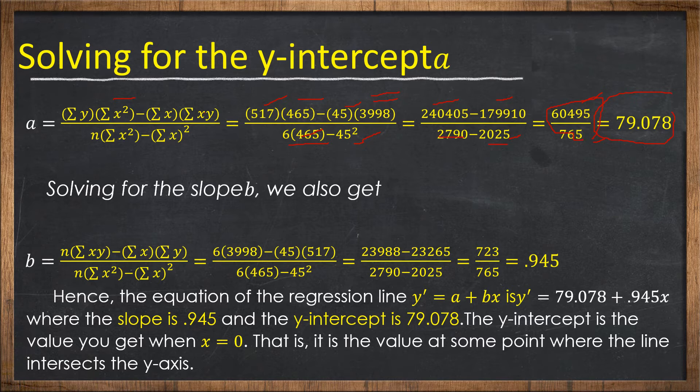That is for a, the y-intercept. For b, the slope, using direct substitution, we multiply, subtract, then divide, and we get b equals 0.945. Hence, the equation of the regression line y = a + bx is y = 79.078 + 0.945x, where the slope is 0.945 and the y-intercept is 79.078. The y-intercept is the value when x equals 0, the point where the line intersects the y-axis.